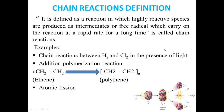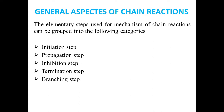Next we'll come to the general aspects of chain reactions. The elementary steps used for the mechanism of chain reactions can be grouped into the following categories: first, the initiation step; second, the propagation step; third, the inhibition step; fourth, the termination step; and fifth, the branching step.